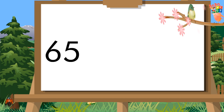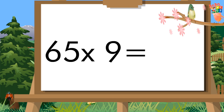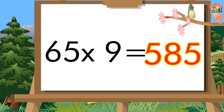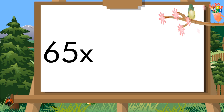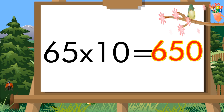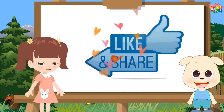65 times 9 is 585. 65 times 10 is 650. 65 times 10 is 650.